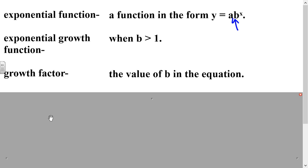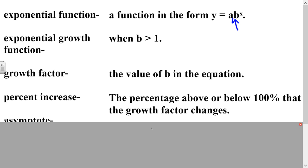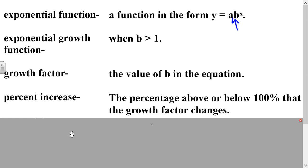Whatever b equals, that is the value of the growth factor in the equation. You'll need to know that because problems will often ask you to identify the growth factor. The percent increase is the percentage above or below 100% that the growth factor changes. Because it's growing, it would really only be above — below would be for decay, since it decreases below 100%. If you're multiplying by something over 100%, it's going to grow.